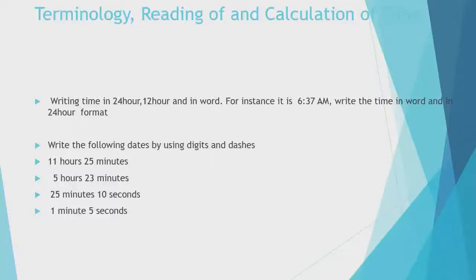Terminology, reading and calculation dealing with time. Writing time in 24 hours, 12 hours in words. For instance, it is 6:37 AM. Write the time in words and in 24 hour format. Write the following dates by using digits and dashes, 11 hours, 25 minutes, 5 hours. In fact, you should get used to writing numbers using digits and dashes.